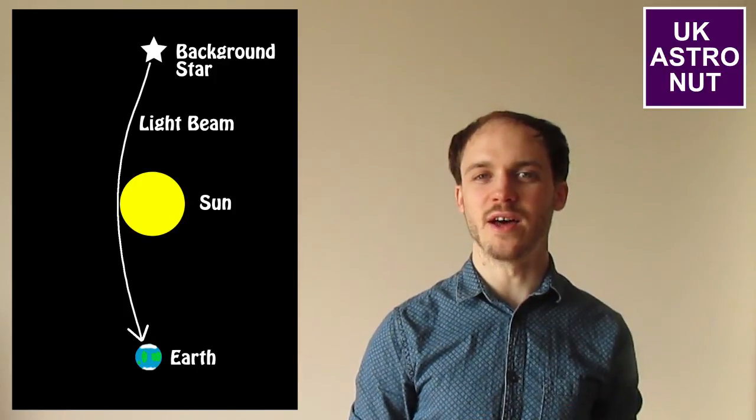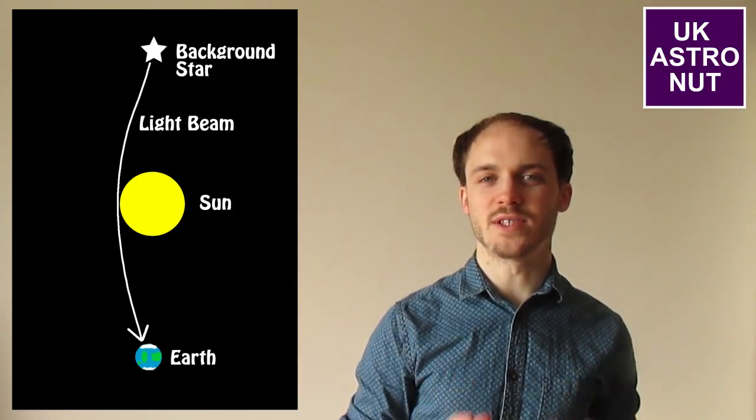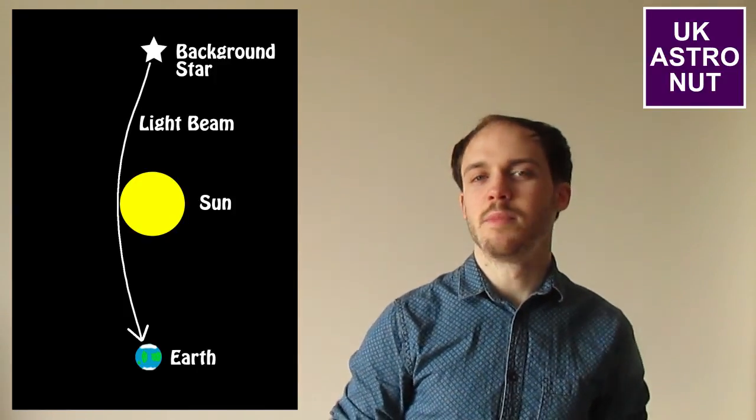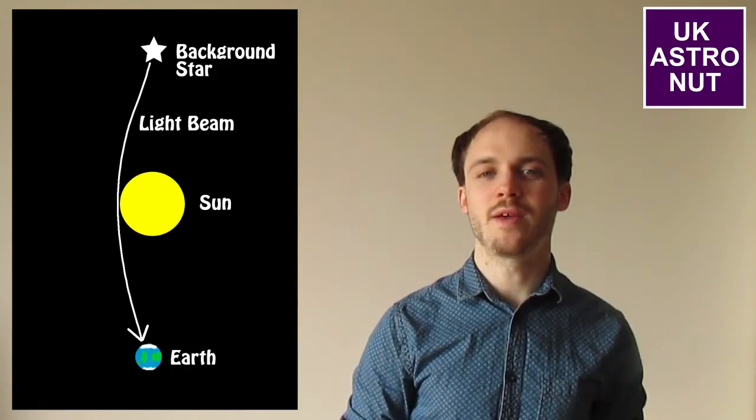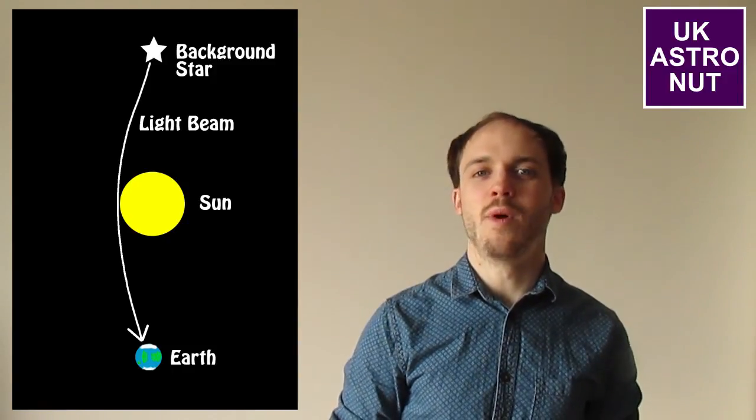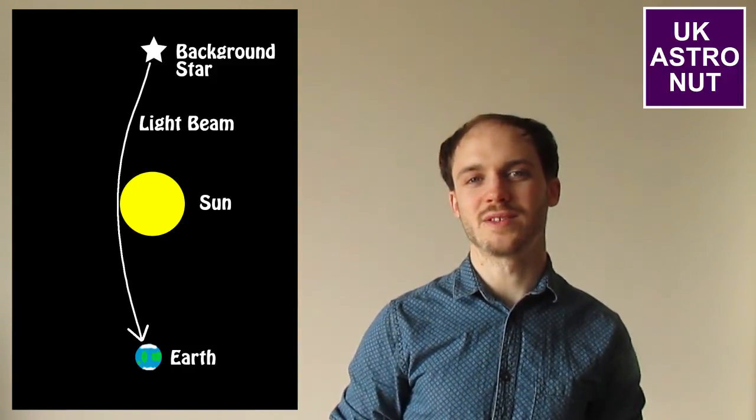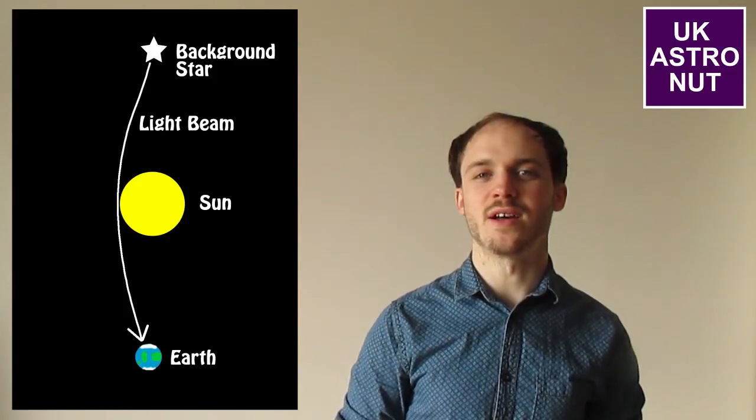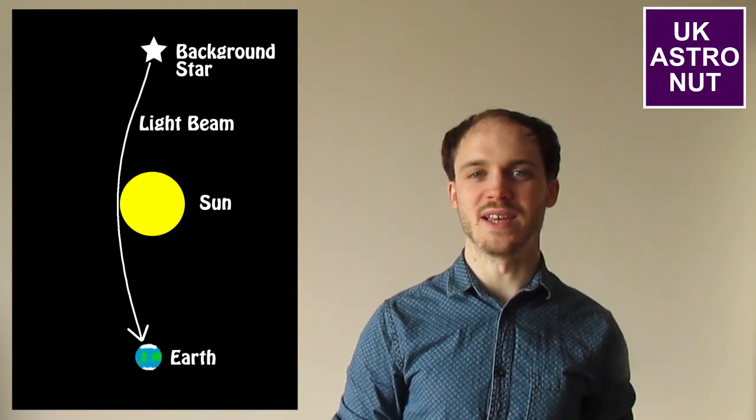Solar eclipses aren't just great to watch — they've also been used in the past for some really important science. The 1919 solar eclipse was used to confirm Einstein's theory of general relativity. Einstein predicted that the mass of the Sun would bend light from stars behind the Sun, but this could only be confirmed during an eclipse, when most of the light from the Sun was blocked, so that the stars around the outside would be bright enough to see.